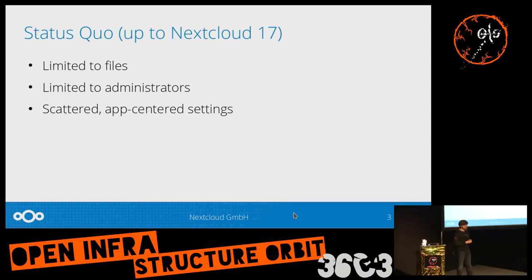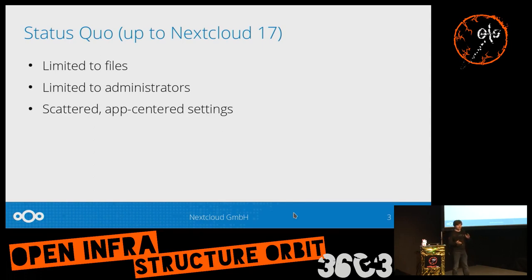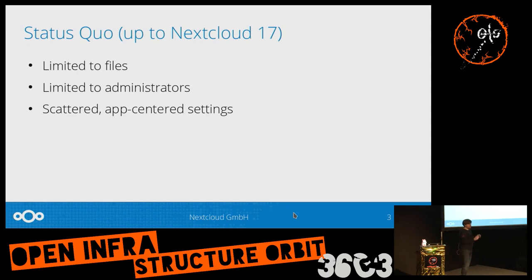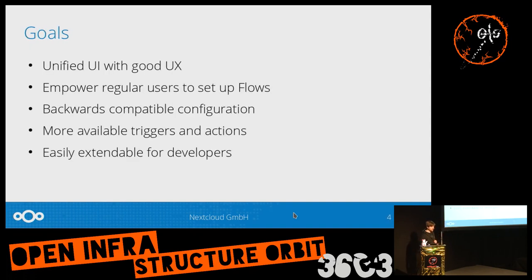It was limited to files, and only administrators could set those flows up. We had basically four actions: blocking files, tagging files, converting them, and running a script. Also the UI was a little bit scattered — the mechanism provided an interface for different apps, and if you had such an app enabled in Next Cloud, you would have multiple separate entries in settings. So this was not very nice.